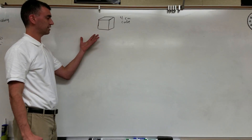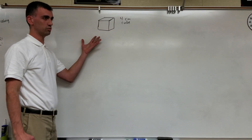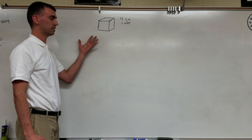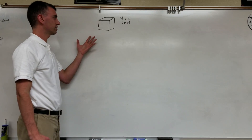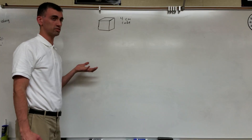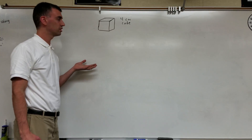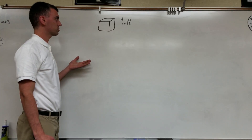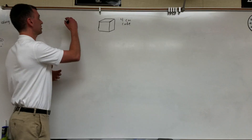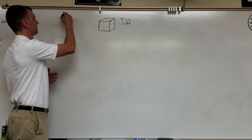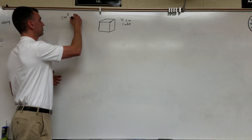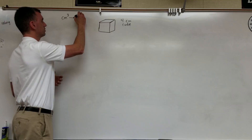Suppose you're looking at a cube in centimeters — four centimeters on each side — so that means four centimeters in all dimensions. You can find the volume of that cube, and suppose I want you to go from centimeters cubed to meters cubed.